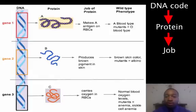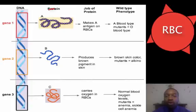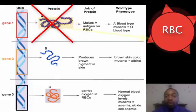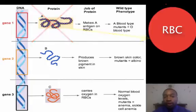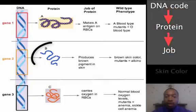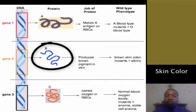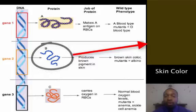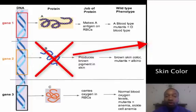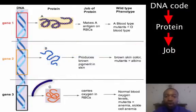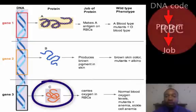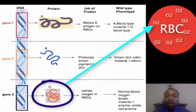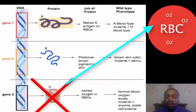What's the connection to traits? Protein A makes the A antigen on red blood cells — if you have a functional allele, you'll be blood type A; if not, blood type O. There's also another allele for B blood type. Protein B produces brown melanin in our skin, so the more melanin you have, the darker your skin color. If you have no functioning B protein, you're albino. For protein C, functional copies mean normal blood oxygen levels; without them, you have low oxygen levels as seen in anemic patients.